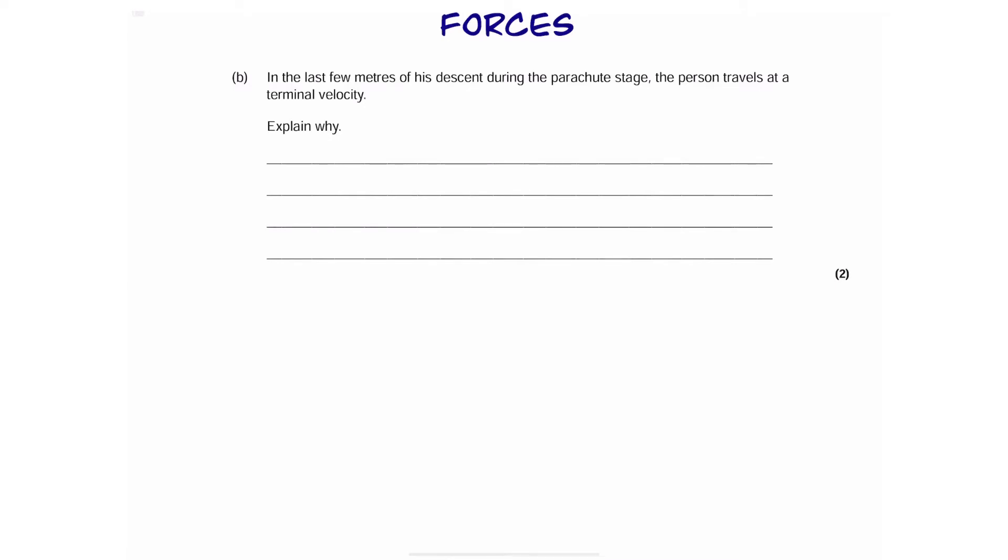Okay, part B. So, let's bring up the picture again. We can see that the question is saying, explain how terminal velocity is achieved. The question is talking about the parachute stage and, in particular, how terminal velocity is achieved.